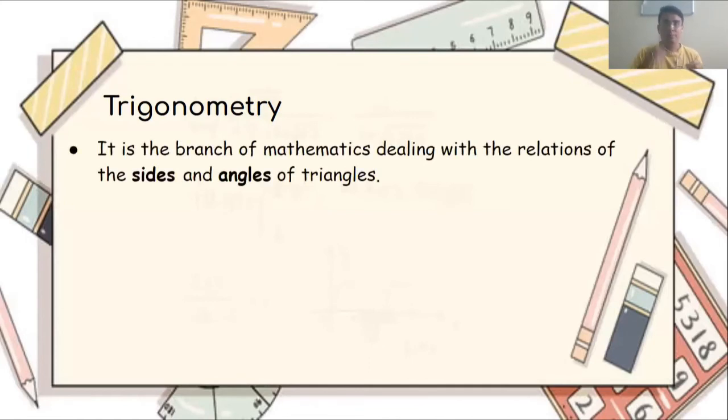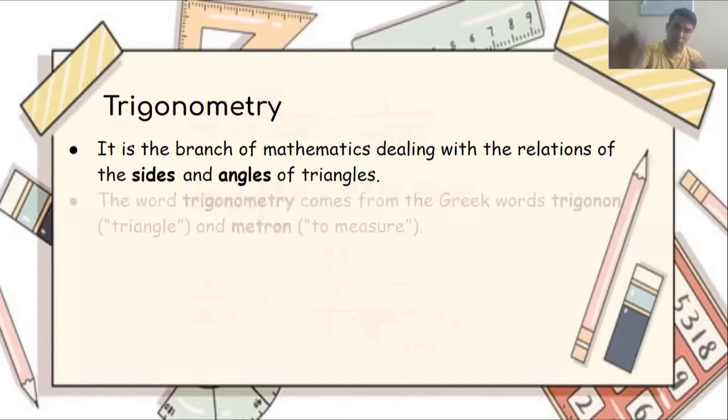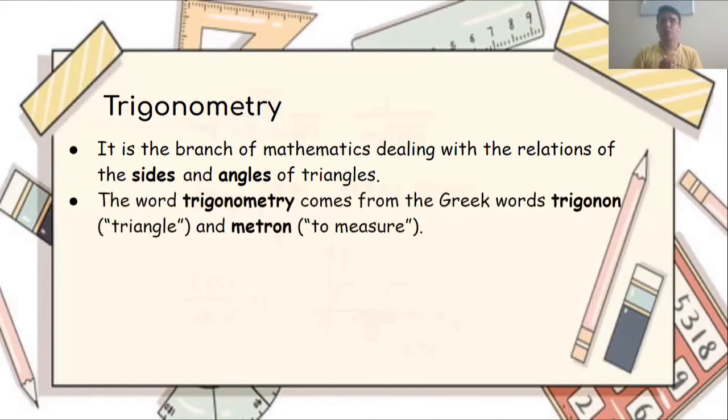What is trigonometry? Let me just rewrite it for you, you can make notes. It is the branch of mathematics dealing with the relations of sides and angles of triangles. Let me just give you how the term trigonometry came. The word trigonometry comes from the Greek word - trigonometry means triangle and metron means to measure.